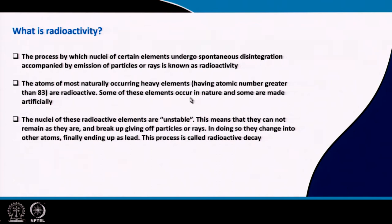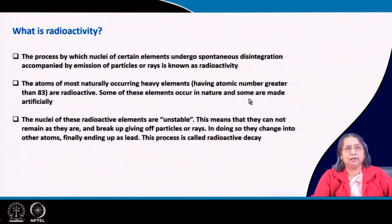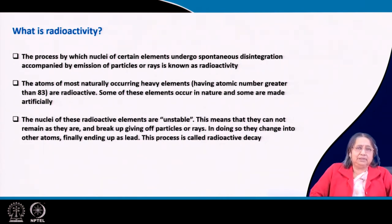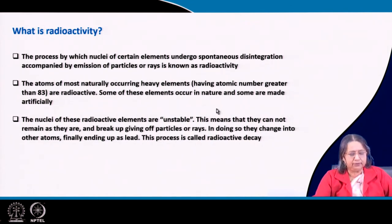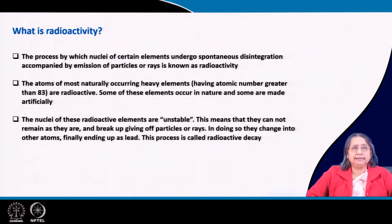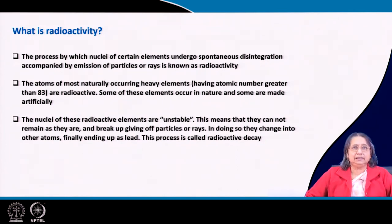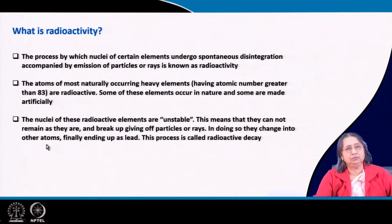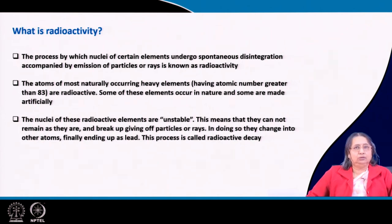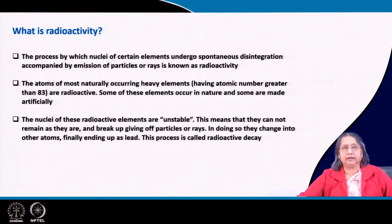Some of these elements occur in nature and some are formed artificially — they are manmade. The nuclei of radioactive elements are unstable; they always radiate some particles or rays. They cannot remain as they are — they always give up some particles or rays, and in doing so they are converted into another atom. Finally, at the end, although it may take a long time, they are transformed into some isotope of lead. This type of disintegration is called radioactive disintegration.